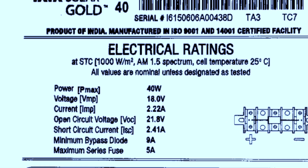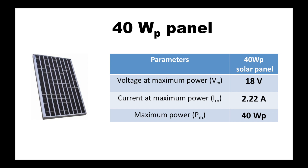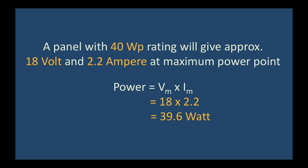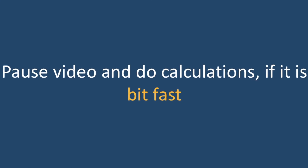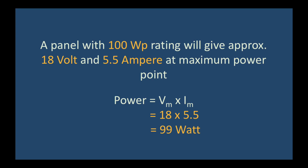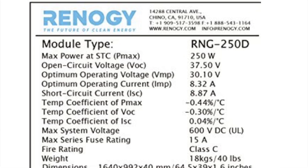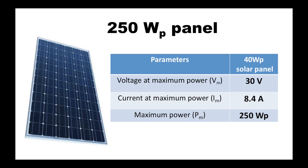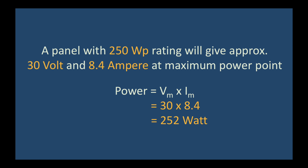Solar panels come in various power ratings in the market. A typical 40-watt panel has a voltage of 18 volts and a current of 2.2 amperes — multiply these and you get approximately 40 watts. A typical 100-watt peak panel is rated at 18 volts and 5.5 amperes. A 250-watt panel has a voltage of around 30 volts and a current of around 8.4 amperes. You multiply the Vm (maximum voltage) and Im (maximum current) ratings to get the power. All three specifications are mentioned at the back of the panel.